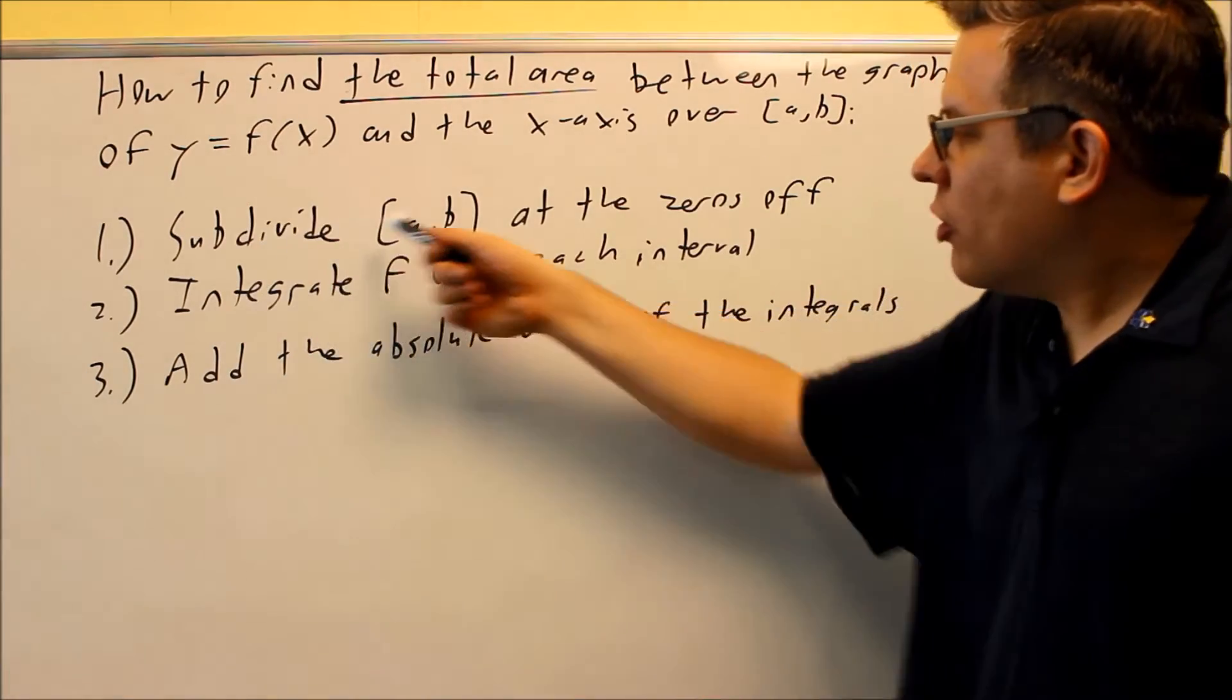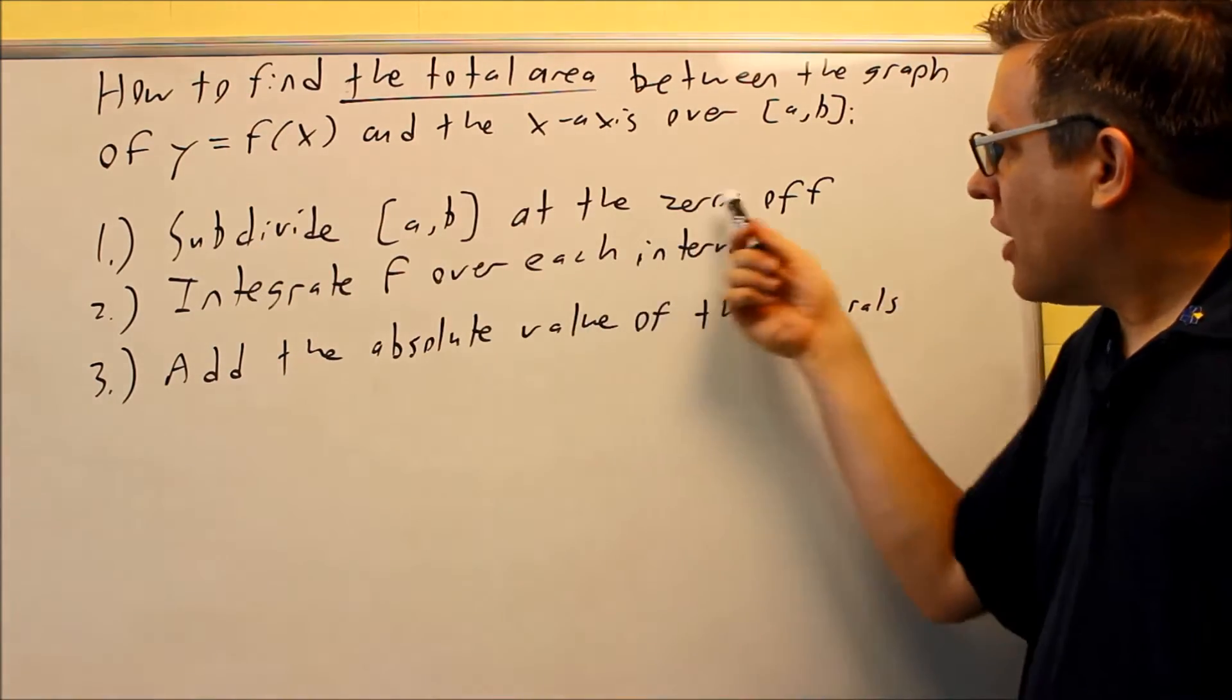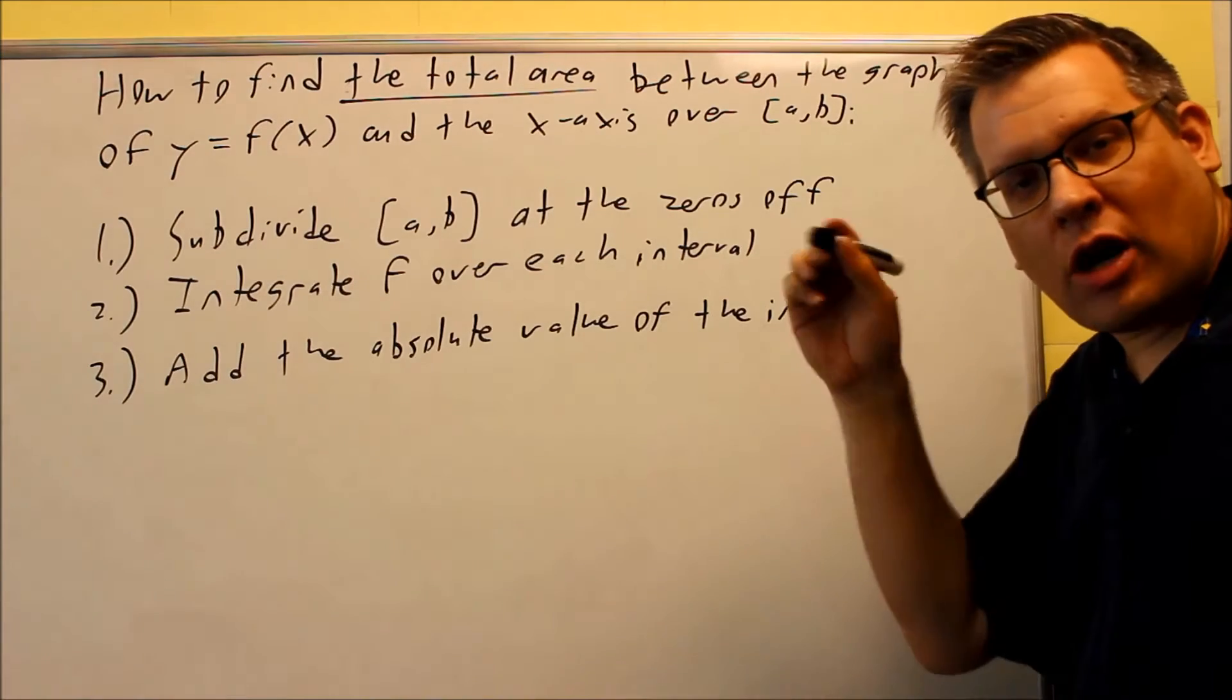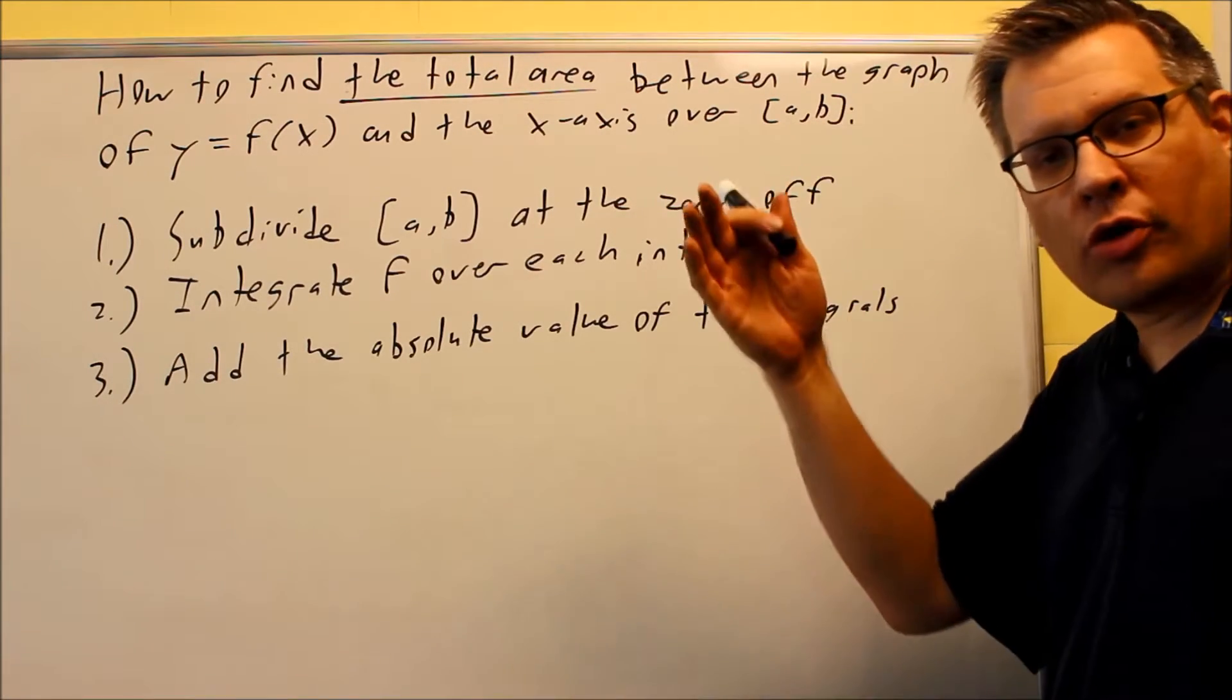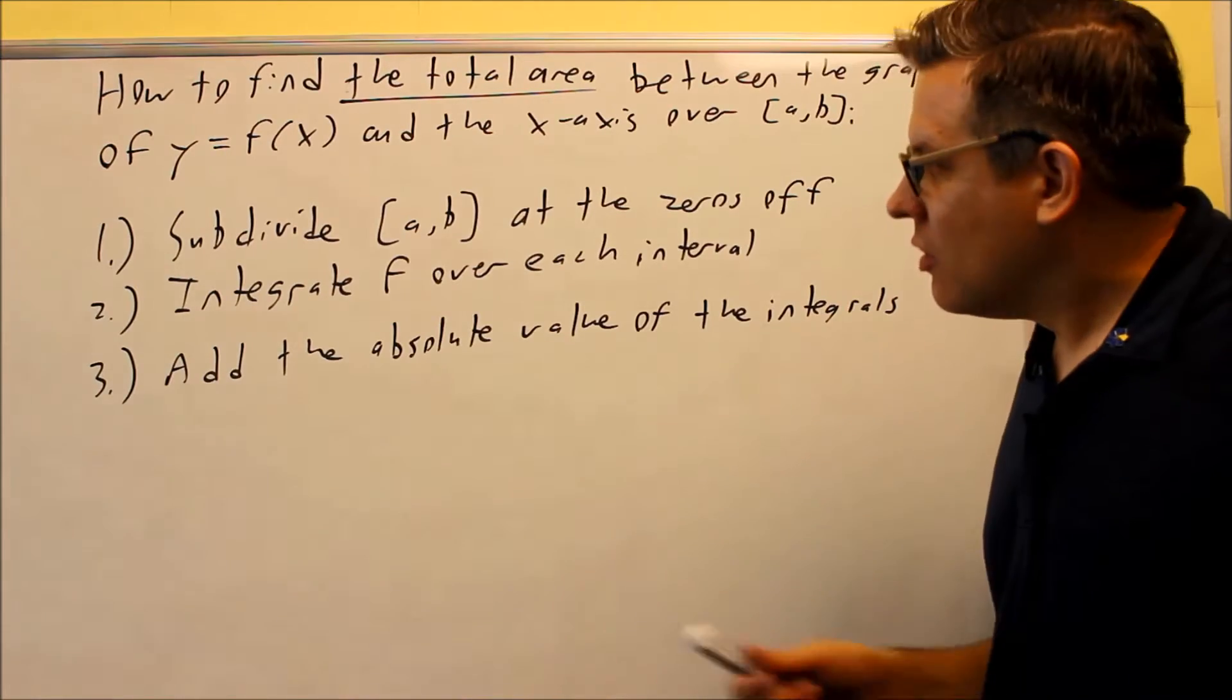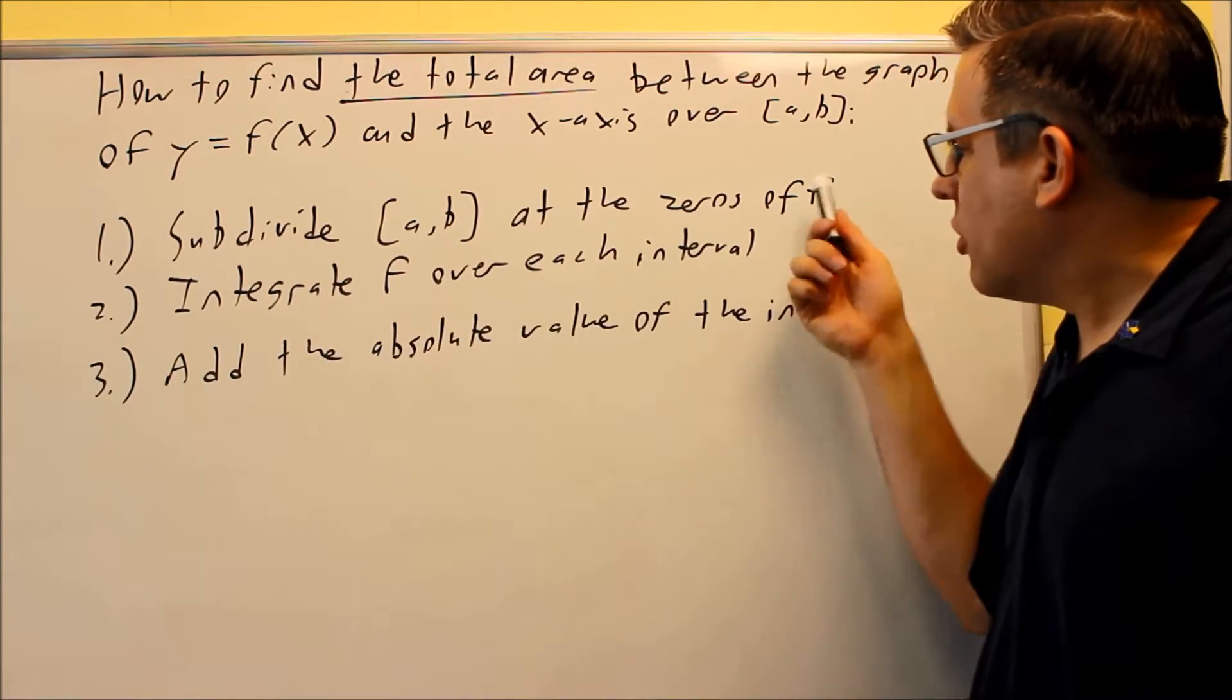So first, you're going to break up the original interval based on the zeros. You want to find out where it crosses the x-axis because that's where it's going to be splitting up whether it's positive or negative areas. So we subdivide that at the zeros.